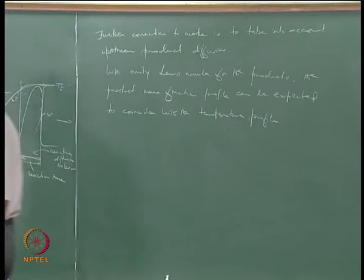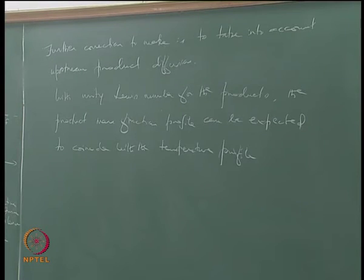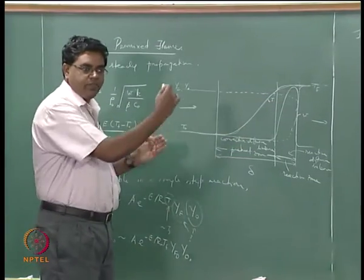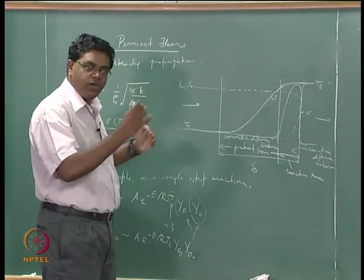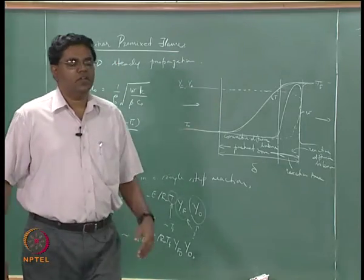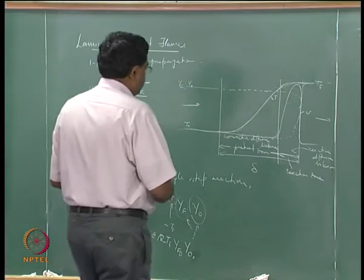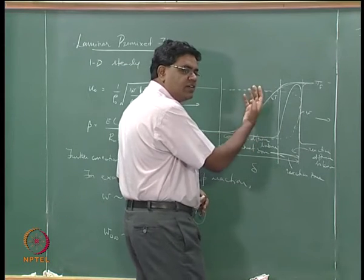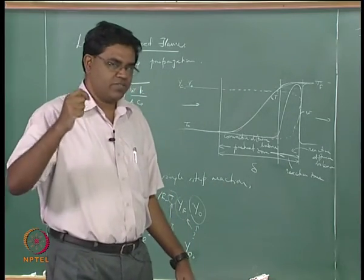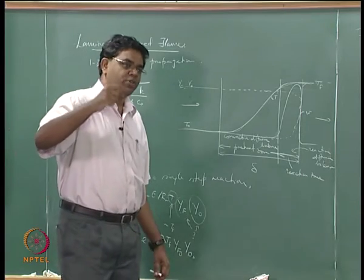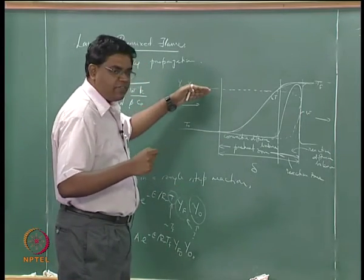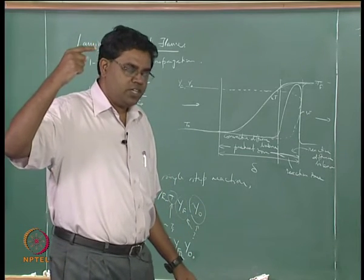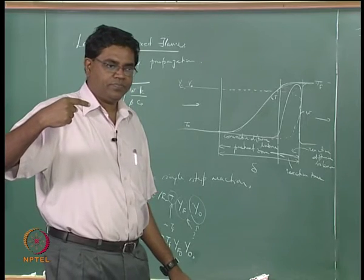By 'coincide' we mean after normalization: take the maximum and minimum for both the mass fraction (0 to 1) and the temperature (say 300 K to 2500 K), normalize both from 0 to 1, and then the profiles should coincide. Concentration means how much of a given species there is relative to the total mixture — mass fractions are the density of that species divided by the density of the mixture.